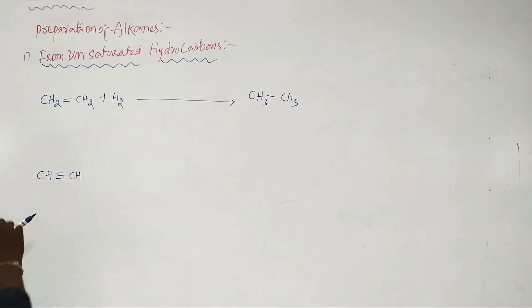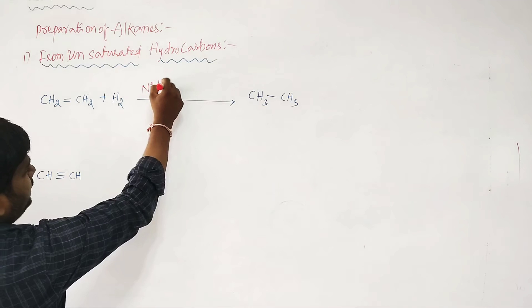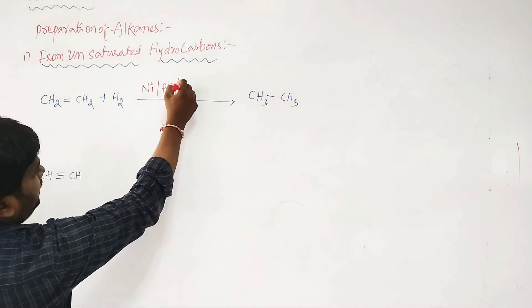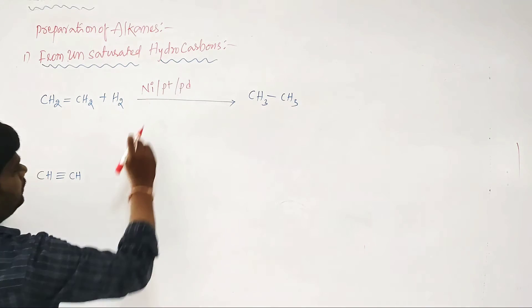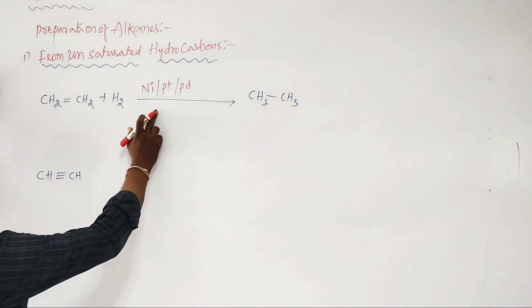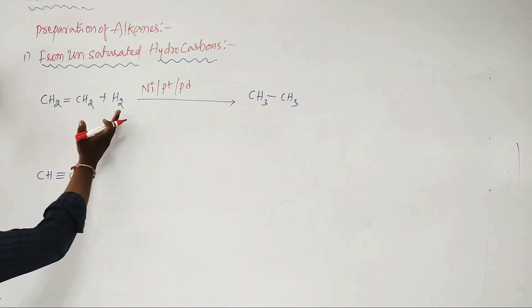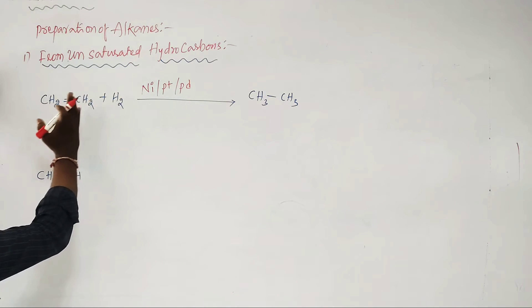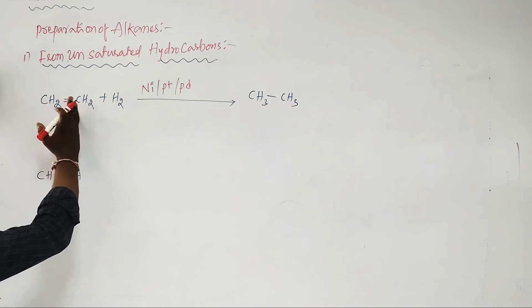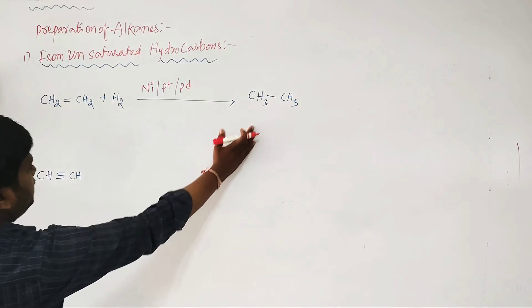The hydrogenation reaction is carried out in the presence of nickel, platinum, or palladium as catalysts. Platinum and palladium require low temperature, while nickel requires high temperature. This process is also called reduction of alkenes, and we get alkanes as the product.